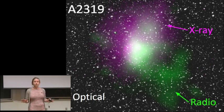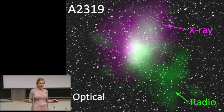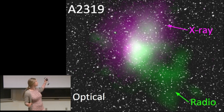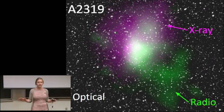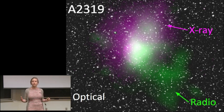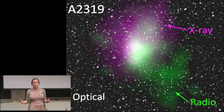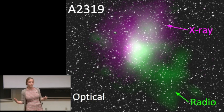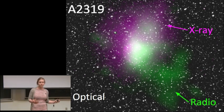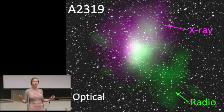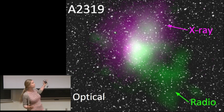These galaxies are embedded in a very hot gas, hot enough to emit X-rays, which you can see in sort of pinkish purple. Throughout this hot gas, there are magnetic fields and there are very energetic particles called cosmic rays. These cosmic rays can interact with this hot X-ray emitting gas and magnetic fields to produce radio waves, which you can see in green.